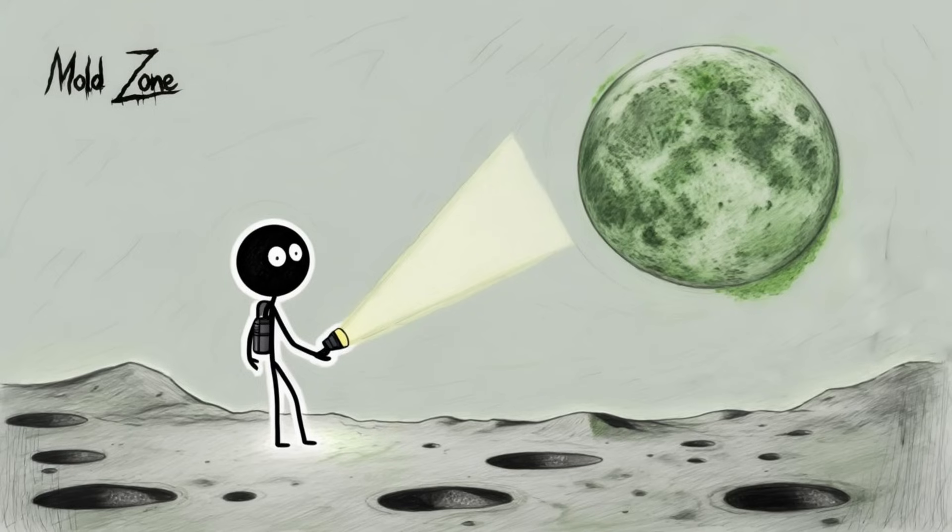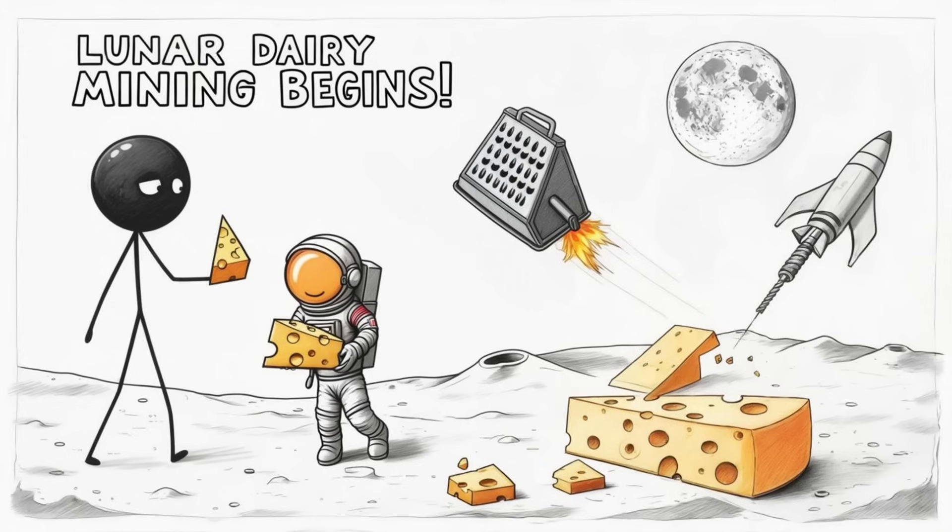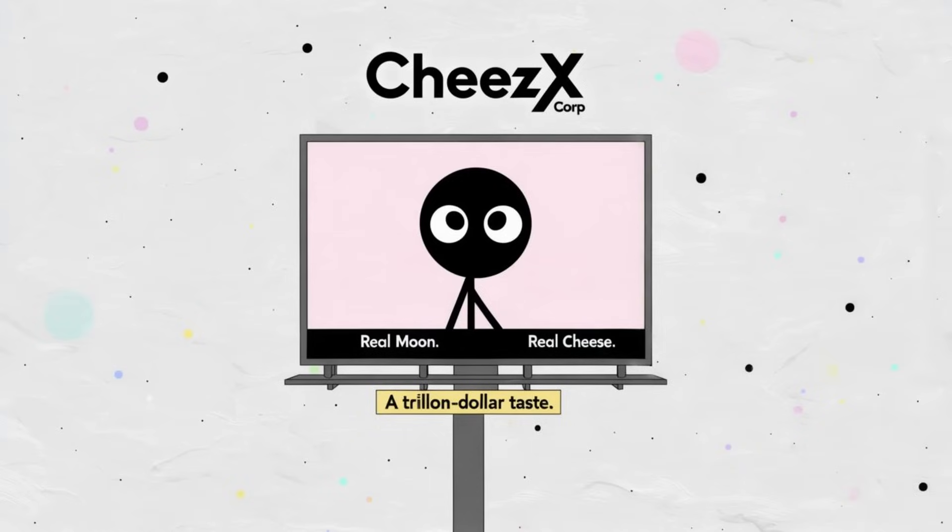But hold on. What about us? Humans, being humans, would not sit still while an entire planetary satellite of cheese just hangs there. We would absolutely try to eat it. Giant mining drills. Cheese shuttles. Industrial graders in space. We'd invent a whole industry around lunar dairy extraction. Cheese X Corp. would be the first trillion dollar company and ads would read Real Moon, Real Cheese.